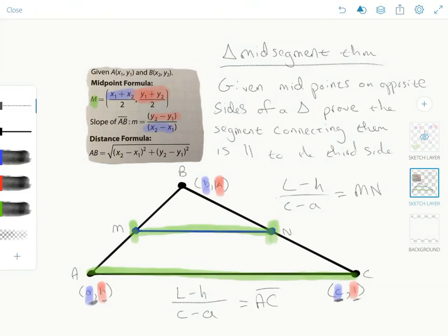So from that, we can conclude that the slopes of those two lines will always be the same and that those two line segments then, the triangle mid-segment and the opposing or the third side of the triangle will always be parallel.